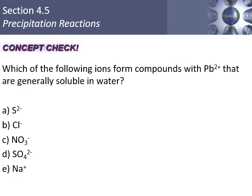Which ions form compounds with lead that are generally soluble? The answer is nitrate — Rule 1 says nitrates are always soluble. Chloride would precipitate because lead is one of the exceptions for chloride. Sulfides must be with Group 1 metals, and Pb2+ is not Group 1. Lead sulfate would also precipitate — lead is one of the four exceptions for sulfate (mercury, lead, calcium, barium). Sodium can't form a compound with Pb2+ because both sodium ion and lead ion are positively charged.